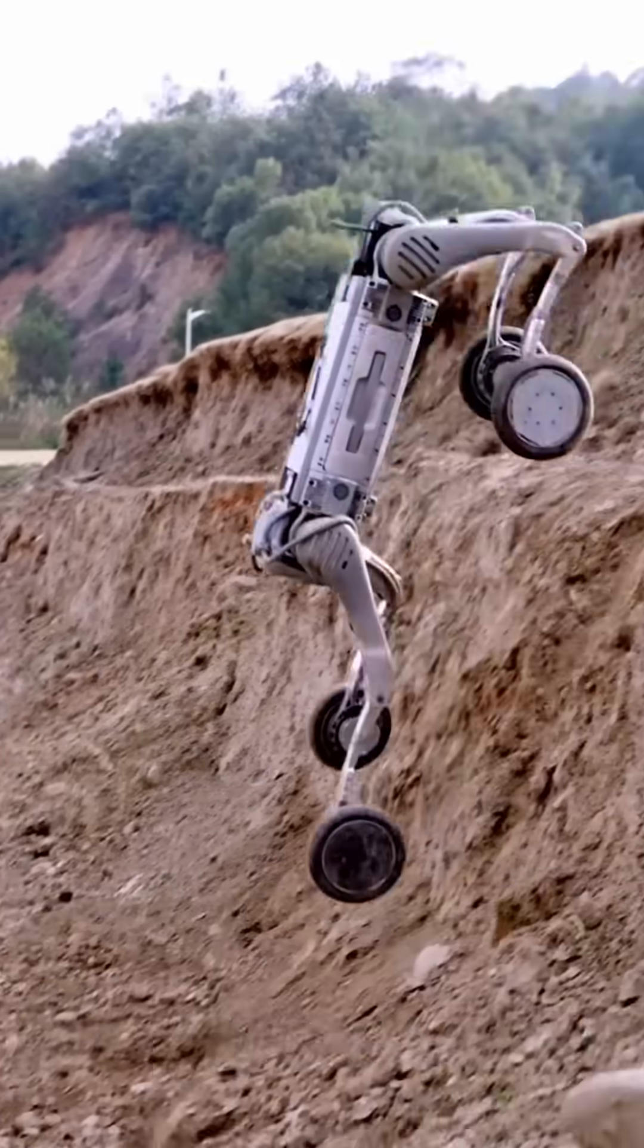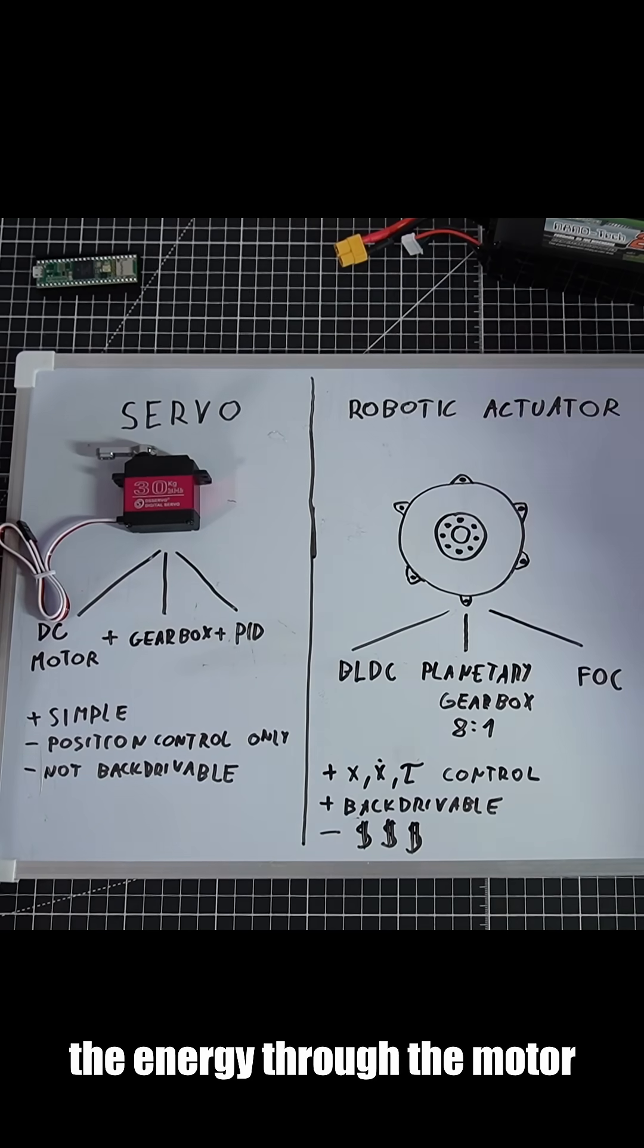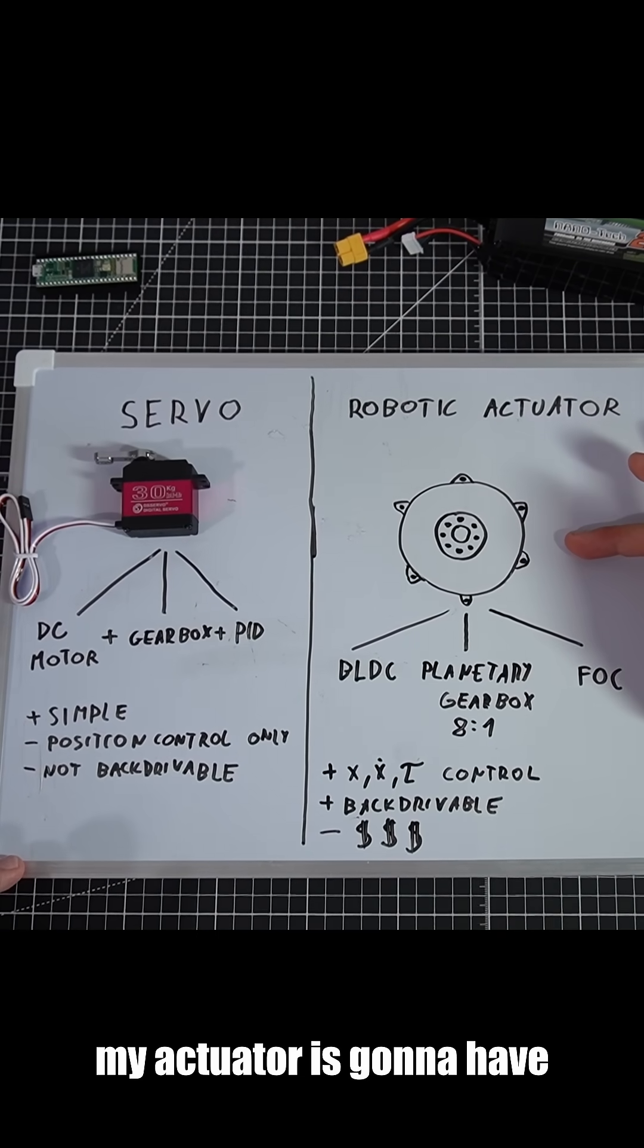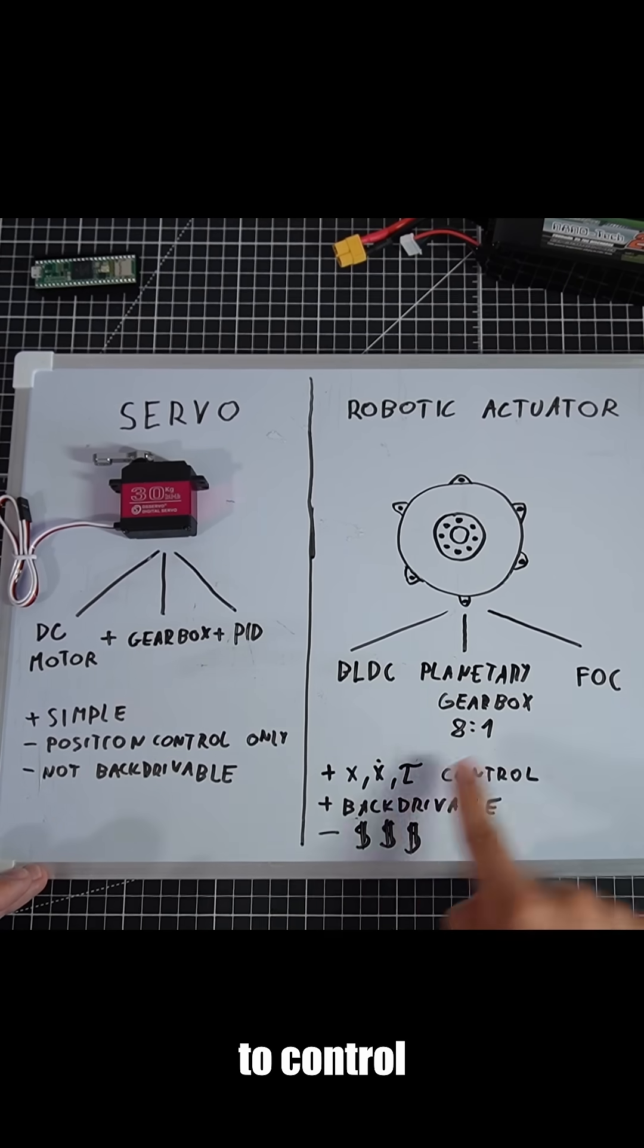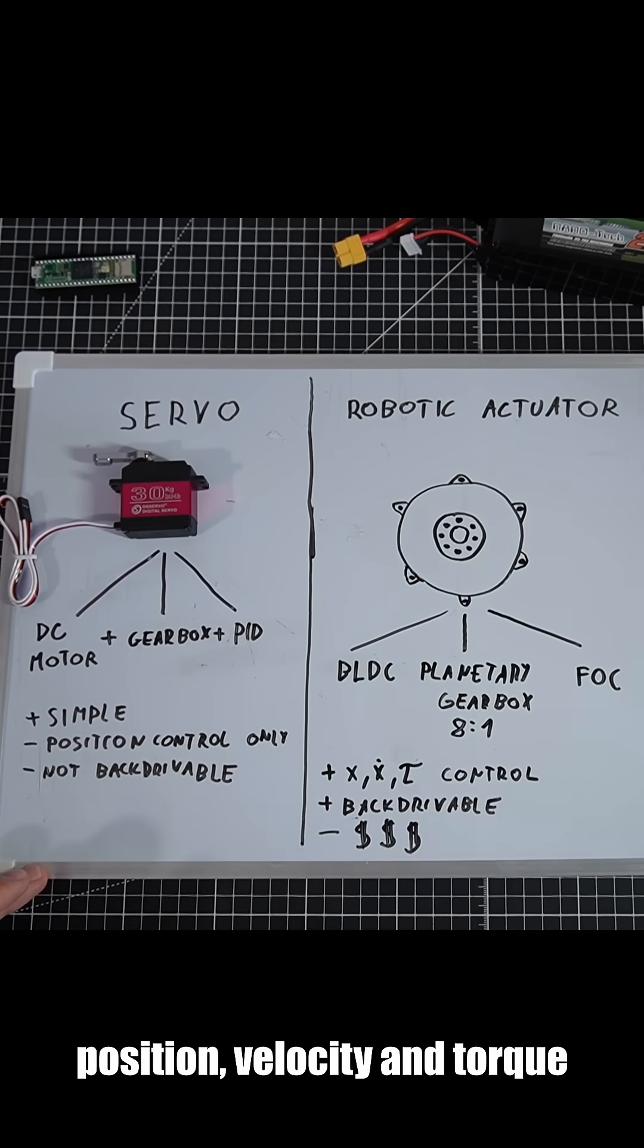So if the robot just smashes to the ground, it's gonna dissipate the energy through the motor. And my actuator is gonna have a field-oriented controller, which is gonna offer me control of position, velocity, and torque.